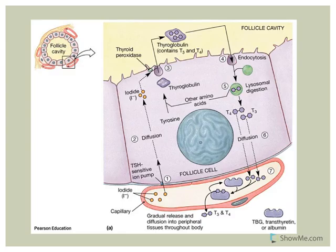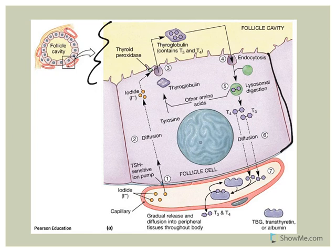Looking at a follicular cell up close, we can see where the colloid is located. There are a number of steps involved in thyroid hormone synthesis, and one absolutely required component is iodine. There is a pump in the follicular cells that brings iodine in from the bloodstream. This pump is TSH sensitive, meaning it's regulated by the hormone TSH produced by the anterior pituitary. In fact, all steps of thyroid hormone synthesis are regulated by TSH.